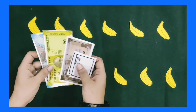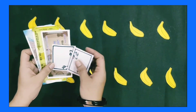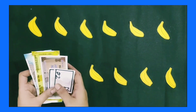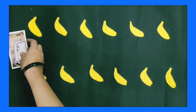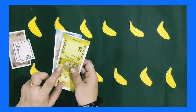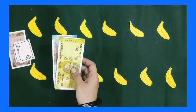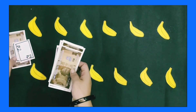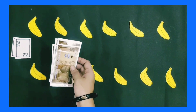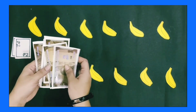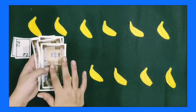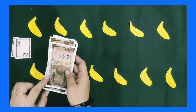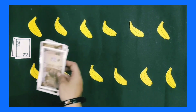We have a 50 rupee note, a 20 rupee note, a 10 rupee note, and two notes of 2 rupees. We have to divide these rupees into 12 equal parts. First, we replace the 50 rupee note and 20 rupee note with 7 notes of 10 rupees. Now we have 7 plus 1, that is 8 notes of 10 rupees. These 8 notes of 10 rupees cannot be divided into 12 equal parts, so we replace them with 16 notes of 5 rupees.